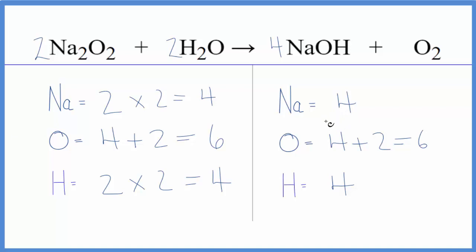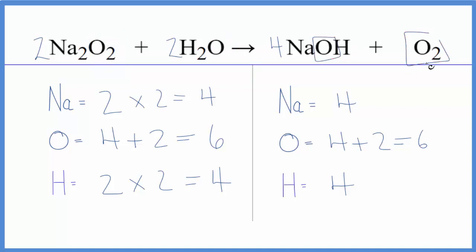So this was a difficult one. We'd change one thing, get close, and then that would change something else. But if you stay with it and are careful about adding your numbers up — for example, we have oxygen here and here, and on this side we have oxygen here and here — if you're careful, you'll end up with the right coefficients. This is Dr. B with the balanced equation for Na2O2 plus H2O, and in this case it's hot water, giving us sodium hydroxide and oxygen gas.